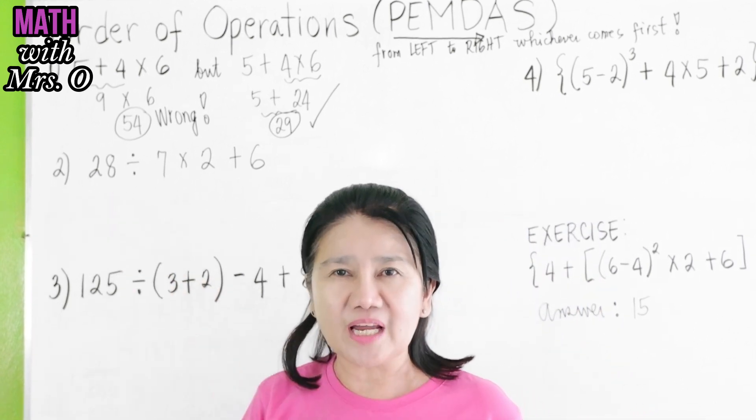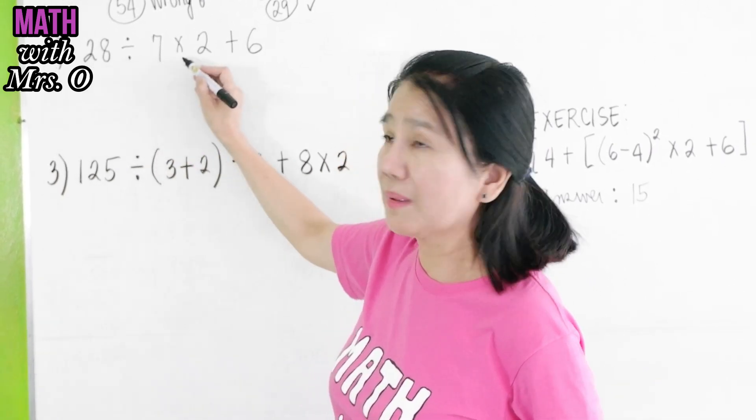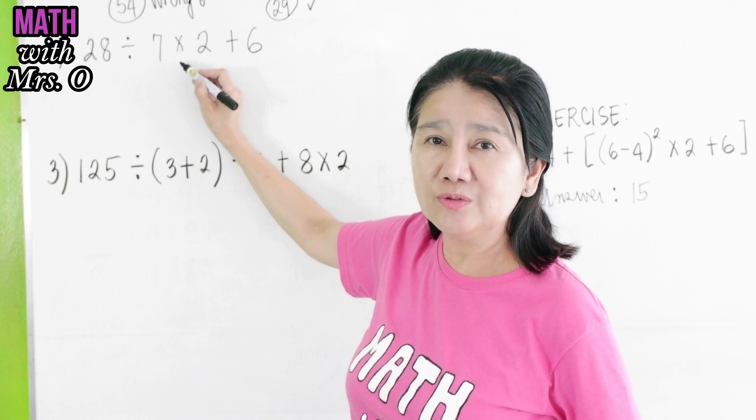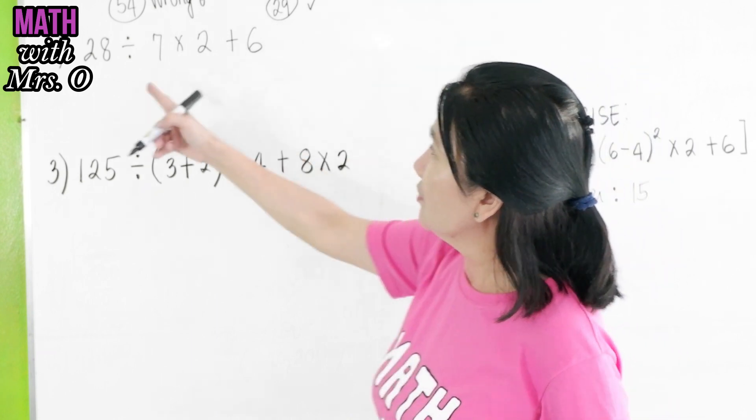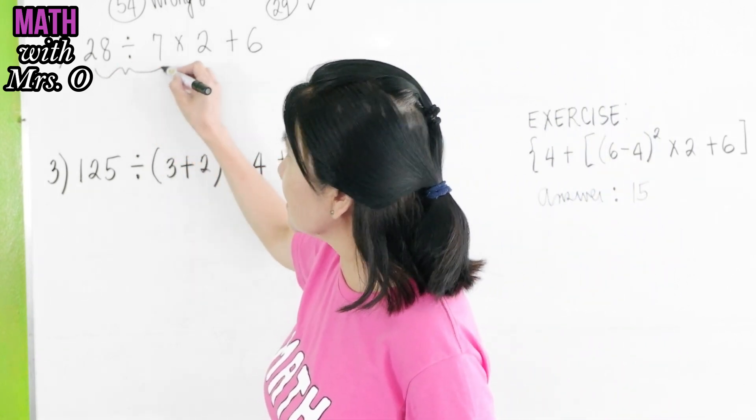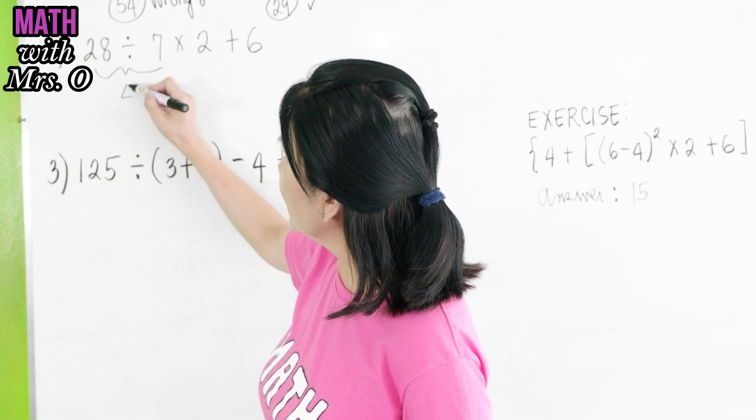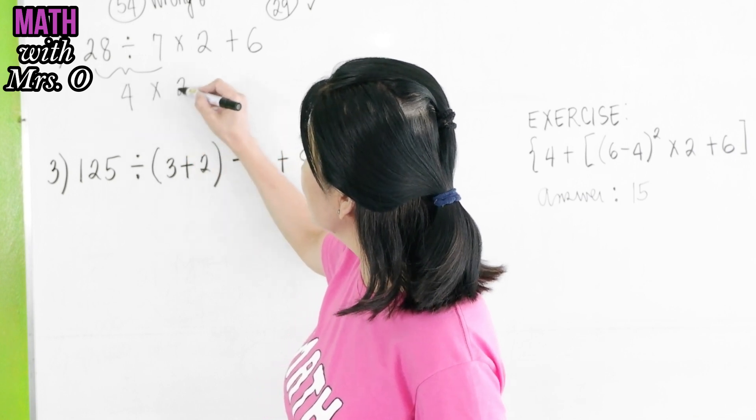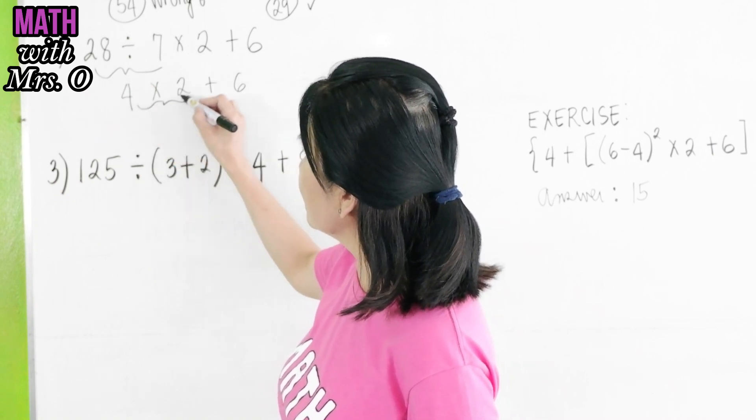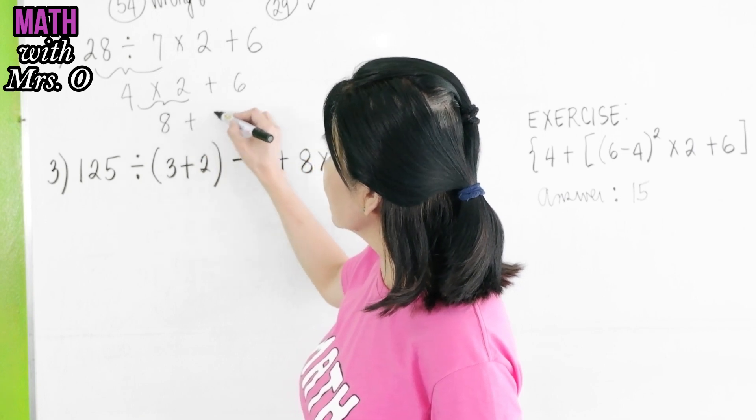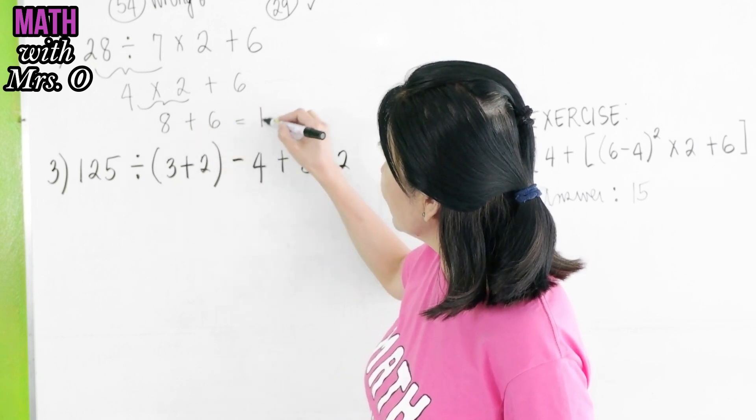In example number two, let's try following the PEMDAS. We have division here and multiplication. So, what do you do first? It says in the rule that you have to do PEMDAS from left to right. From left to right, the division comes first. So, you have to divide first. 28 ÷ 7 is 4 × 2 + 6. From left to right, you multiply first. 4 × 2 is 8 + 6. You simply add 8 + 6 is 14.